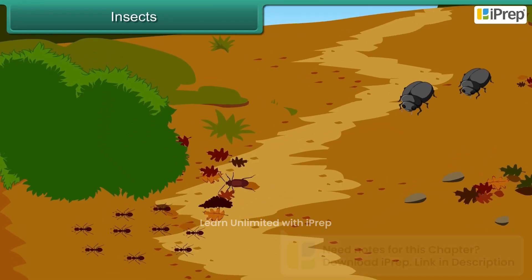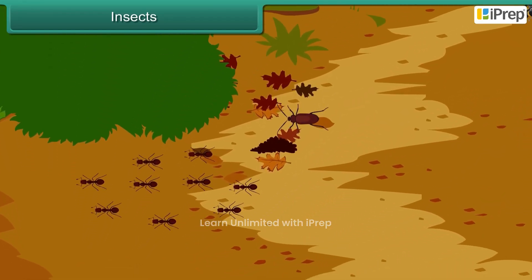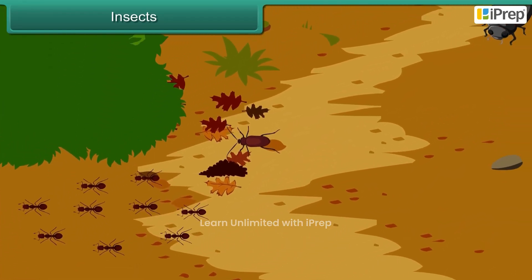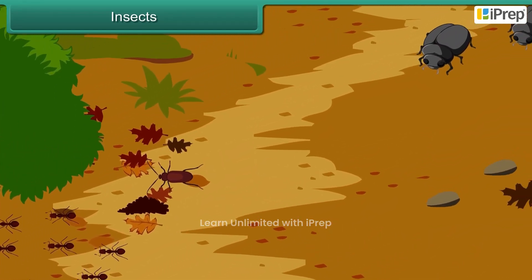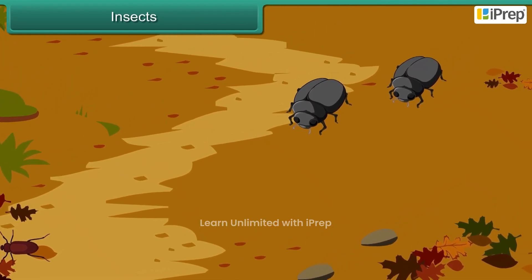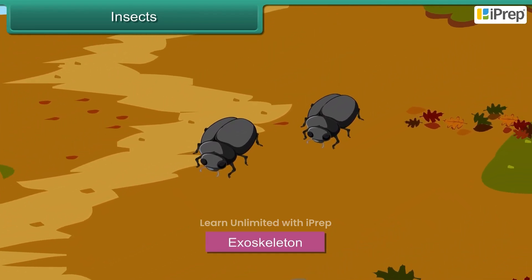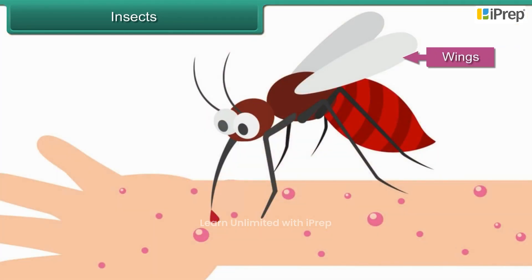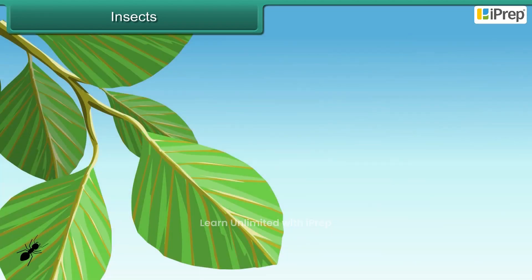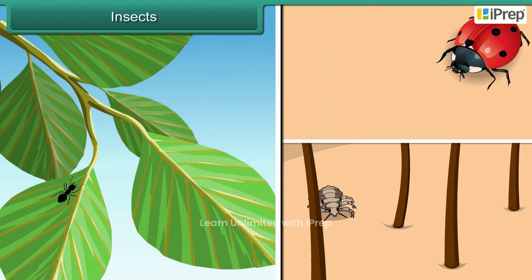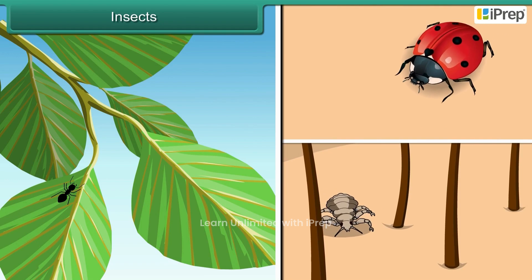Insects are small animals with six legs and a hard outer shell called an exoskeleton. Most have wings and antennae. Some insects creep while others crawl on the ground.